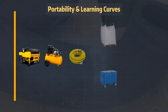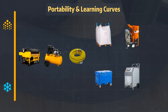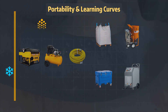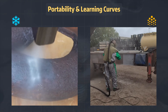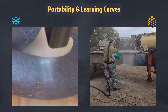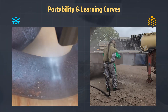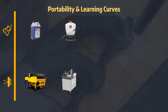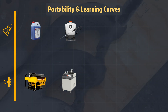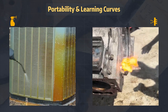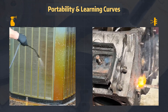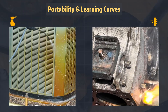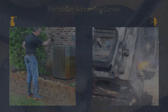Sandblasters and dry ice cleaners involve multiple components, and they rely heavily on experience to achieve good results. Chemical cleaning and laser cleaners are self-contained single-unit machines, requiring less additional setup. They are also more point-and-clean in nature, with less of a learning curve.